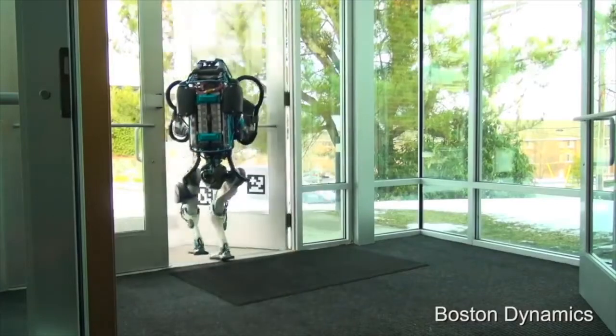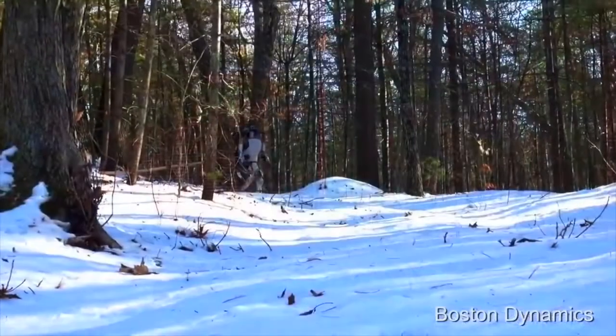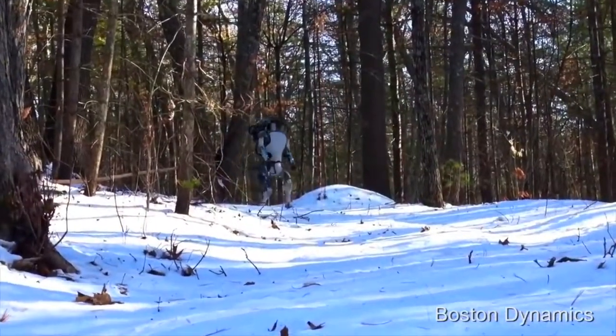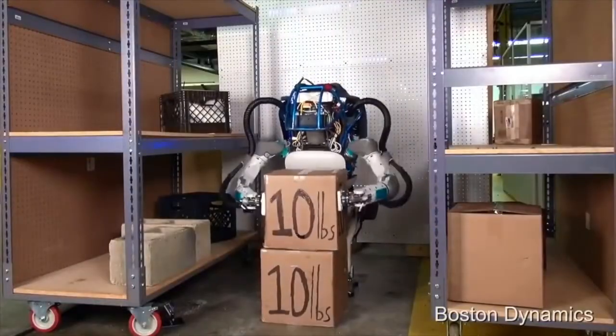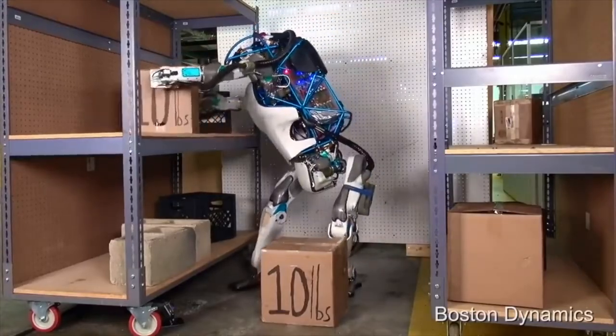For a robot to function properly it needs to be able to quickly plan its movements through the environment around it. A good motion plan is an efficient path through the environment that avoids collisions with people, other robots, or obstacles within the environment.